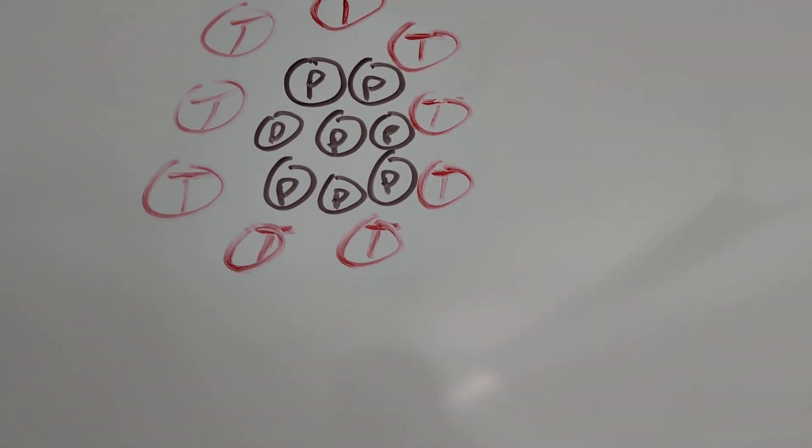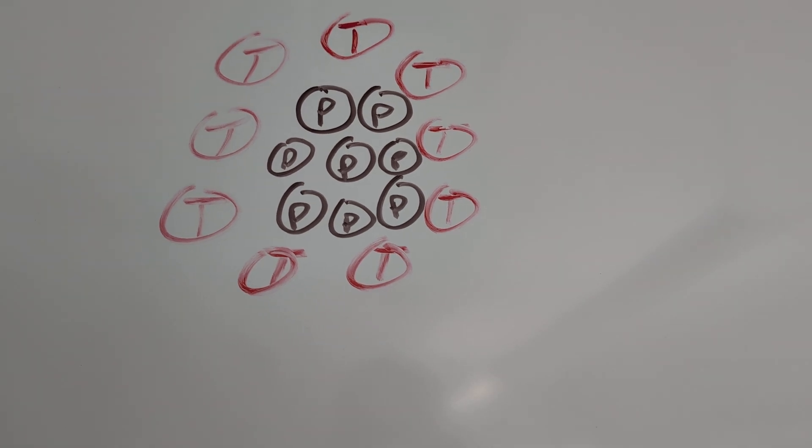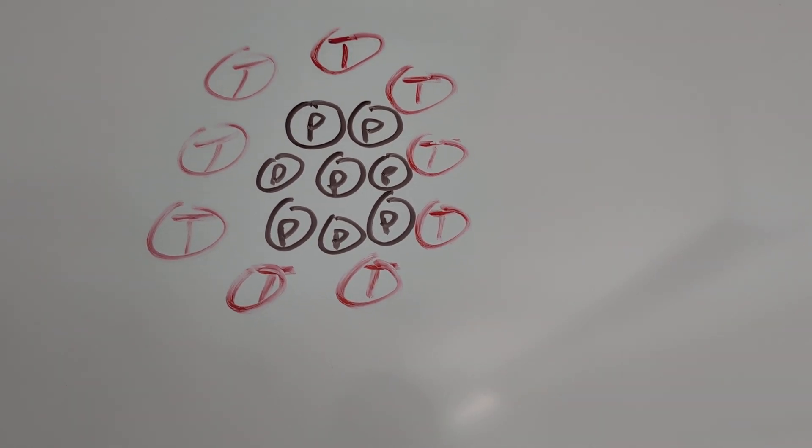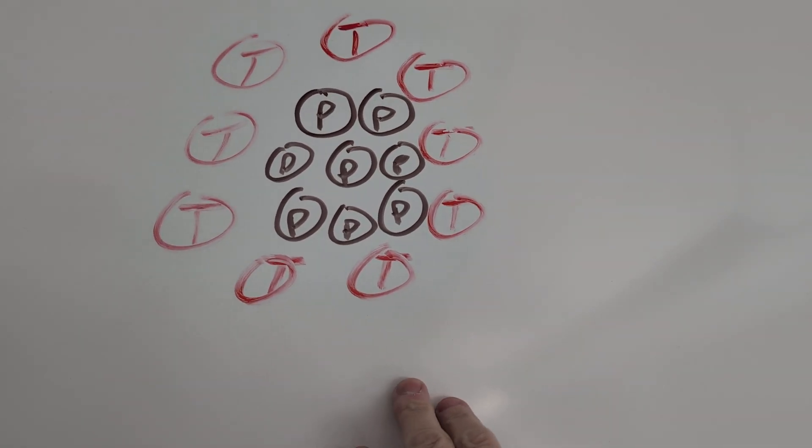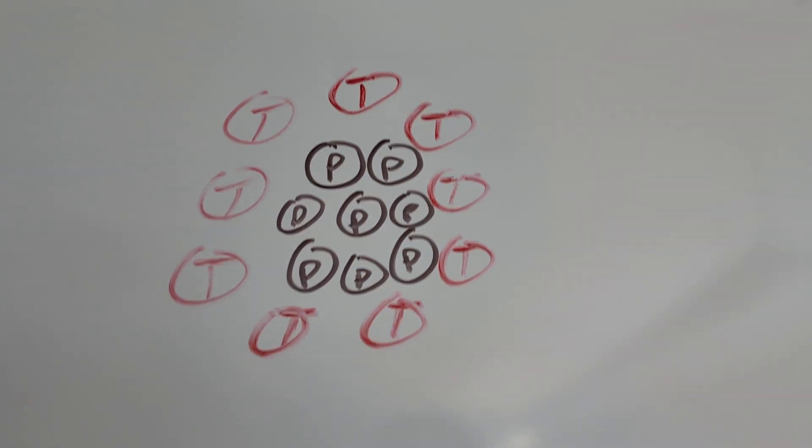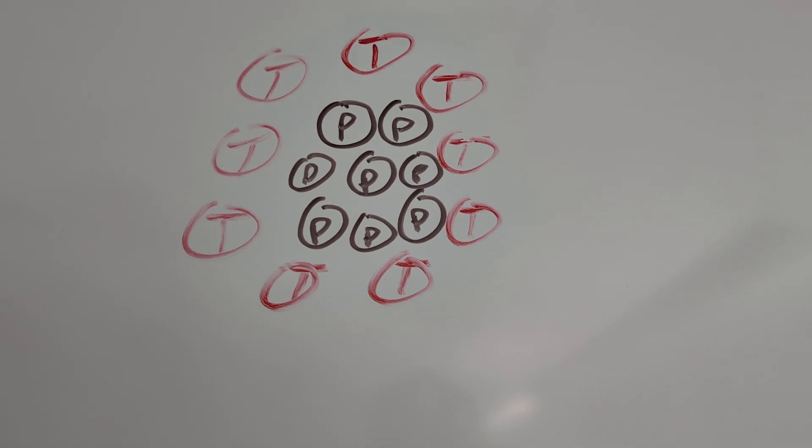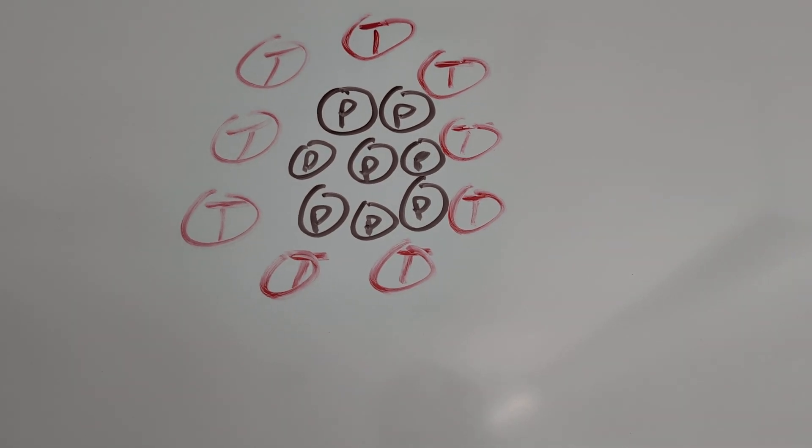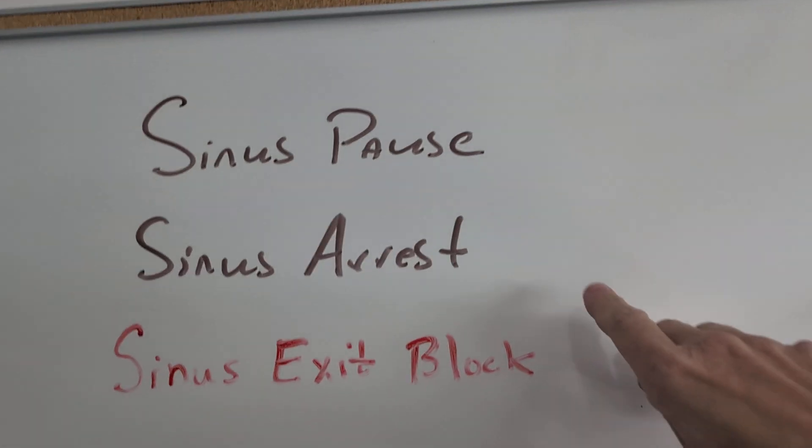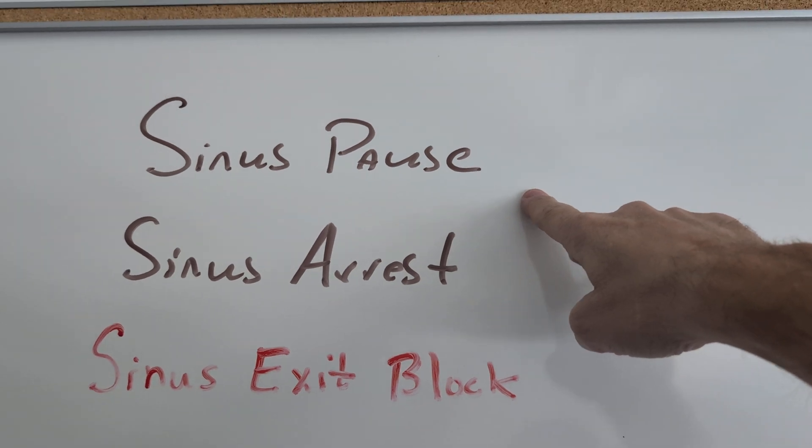And so you can have two distinct types of problems when you talk about dysfunction of these cells. The first is that the P cells simply fail to fire. And so they don't initiate an impulse at all. And in that case, that's where you're going to get cessation of the sinus node activity, either sinus pause or sinus arrest.